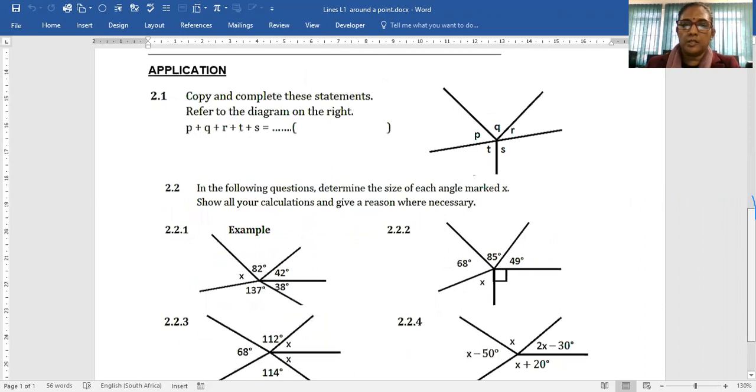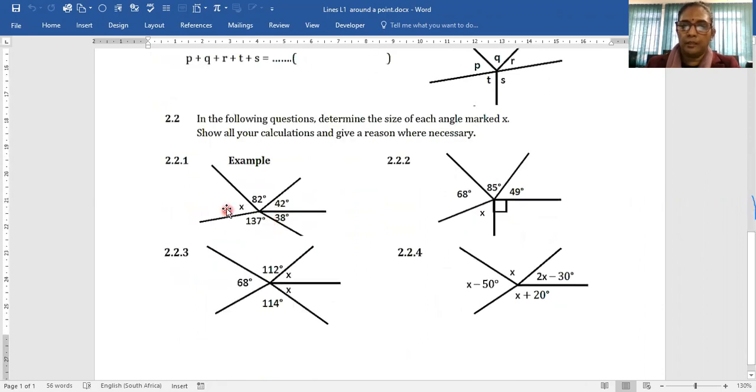For these applications here, again you need to solve for X, and we know angles around the point add up to 360 degrees. Same, similar here and here. In this example, we have X plus X plus 112 plus 68 plus 114, and we solve for X. Similarly, use the same idea around here. Enjoy your application boys and girls. Thank you.